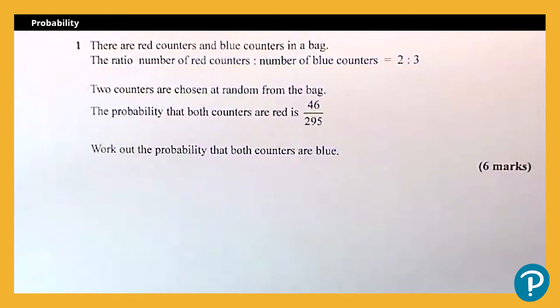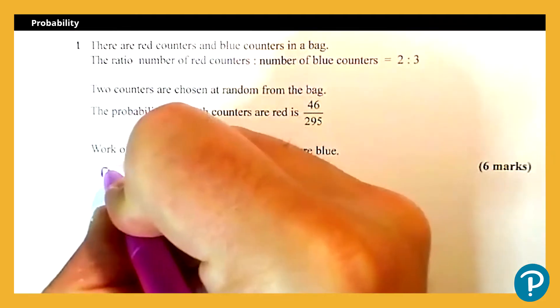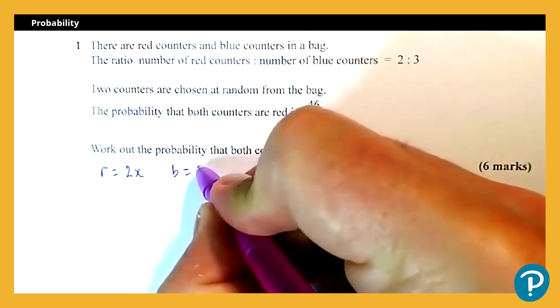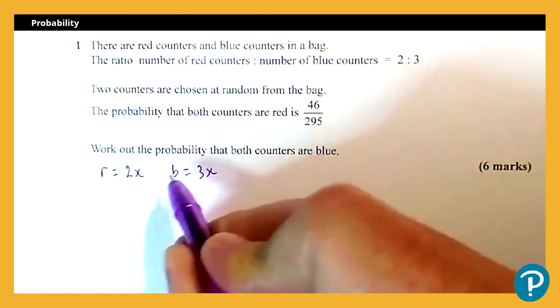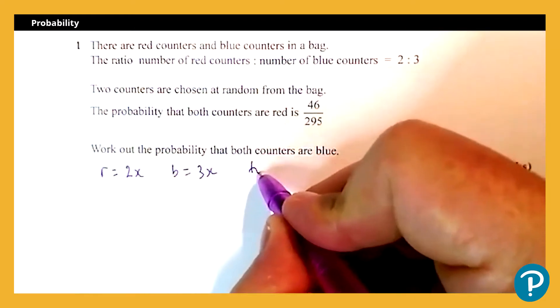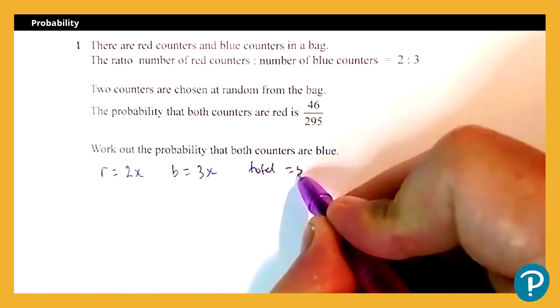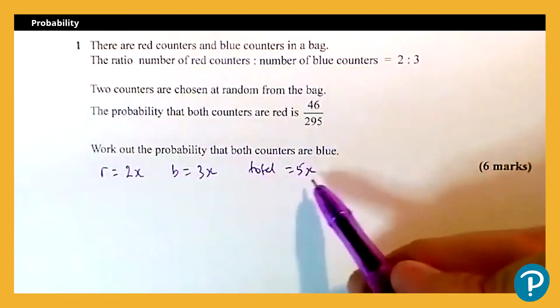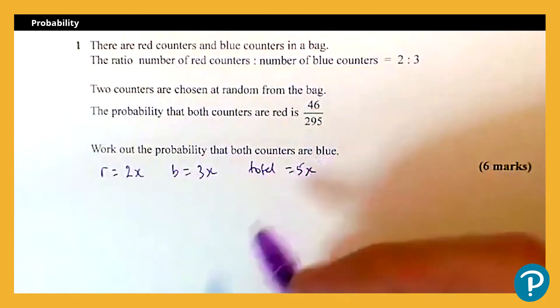Now we don't know how many of either number of counters there are here, so we're going to have to use some algebra to form and solve an equation. So I'm going to start by saying the number of red counters is 2x, then the number of blue counters must be 3x because they're in the ratio two to three. And if that's the case, then the total number of counters is 5x, and that's going to be important when we're forming denominators.